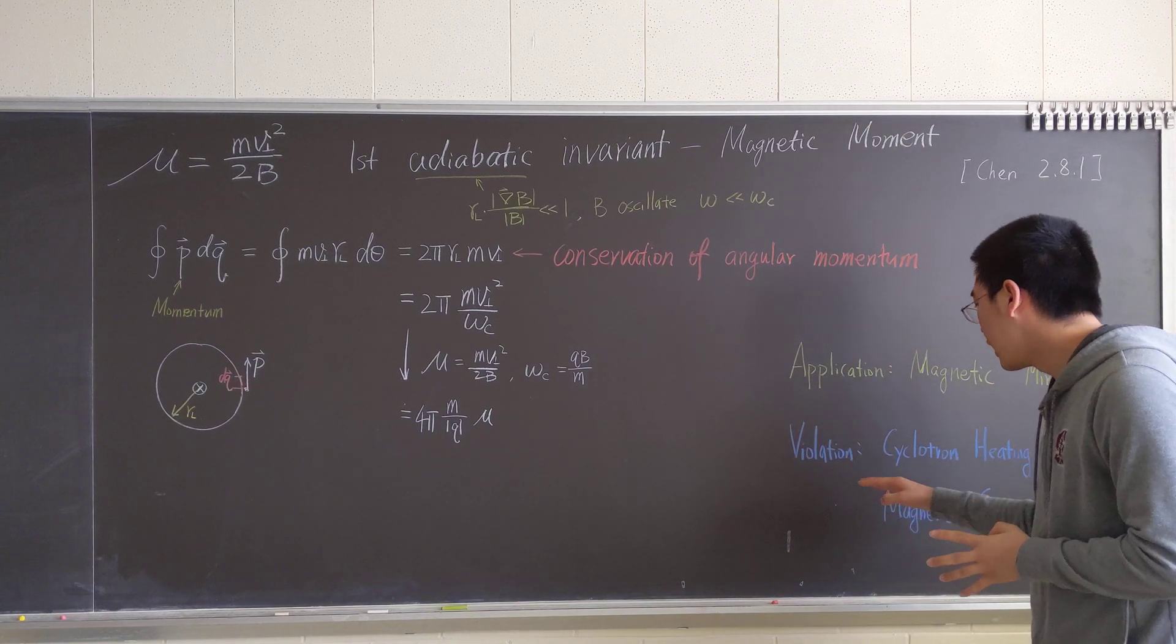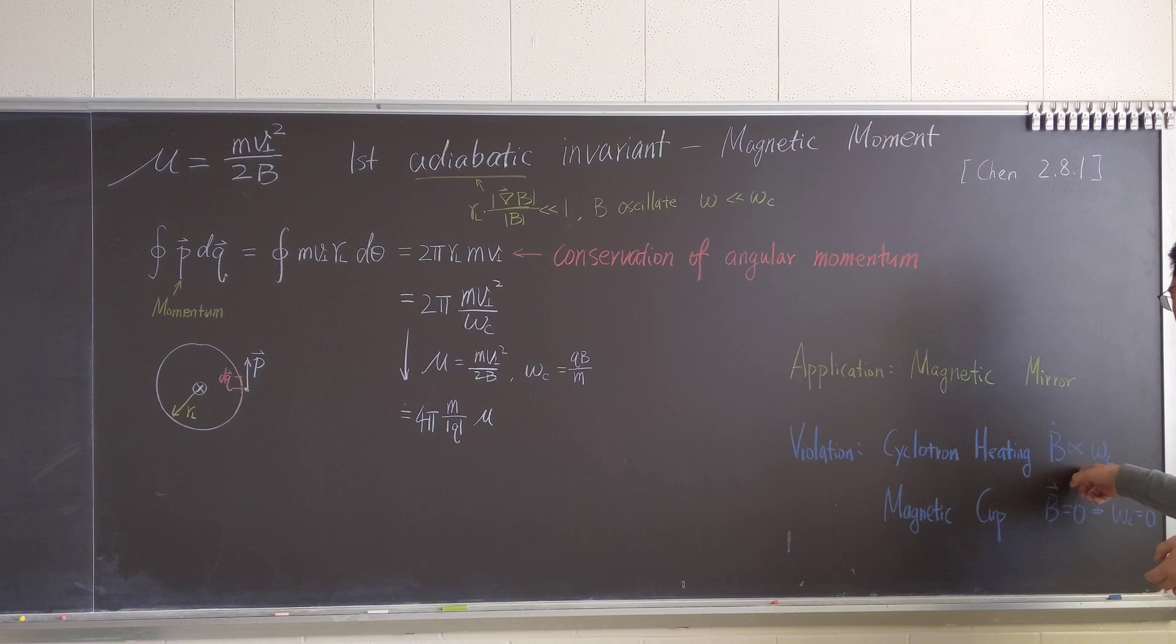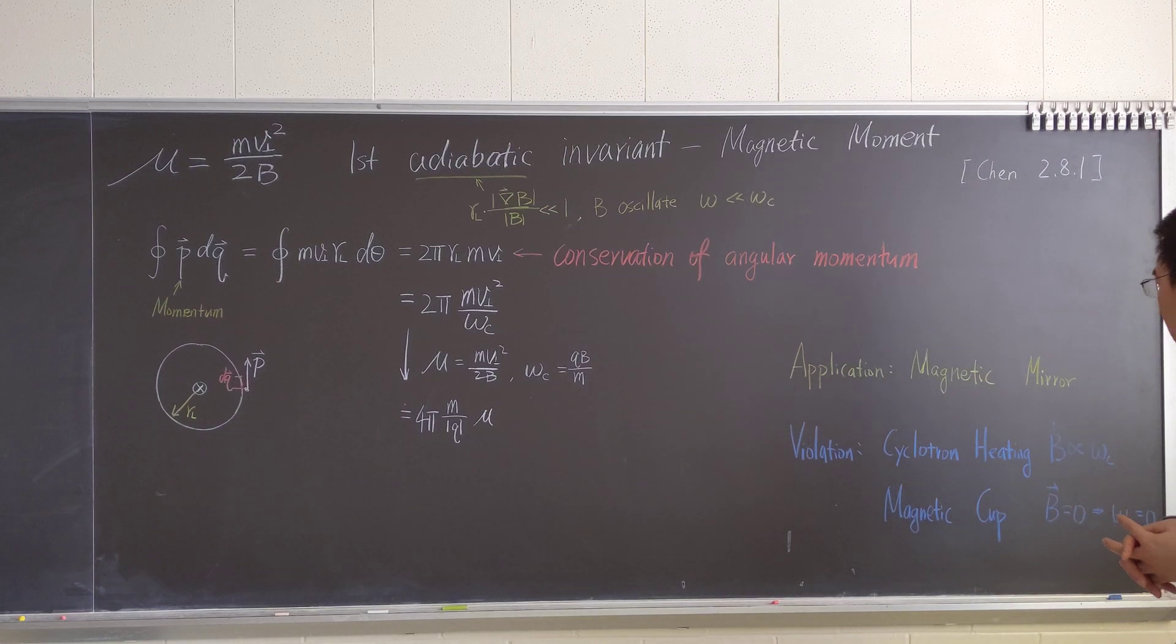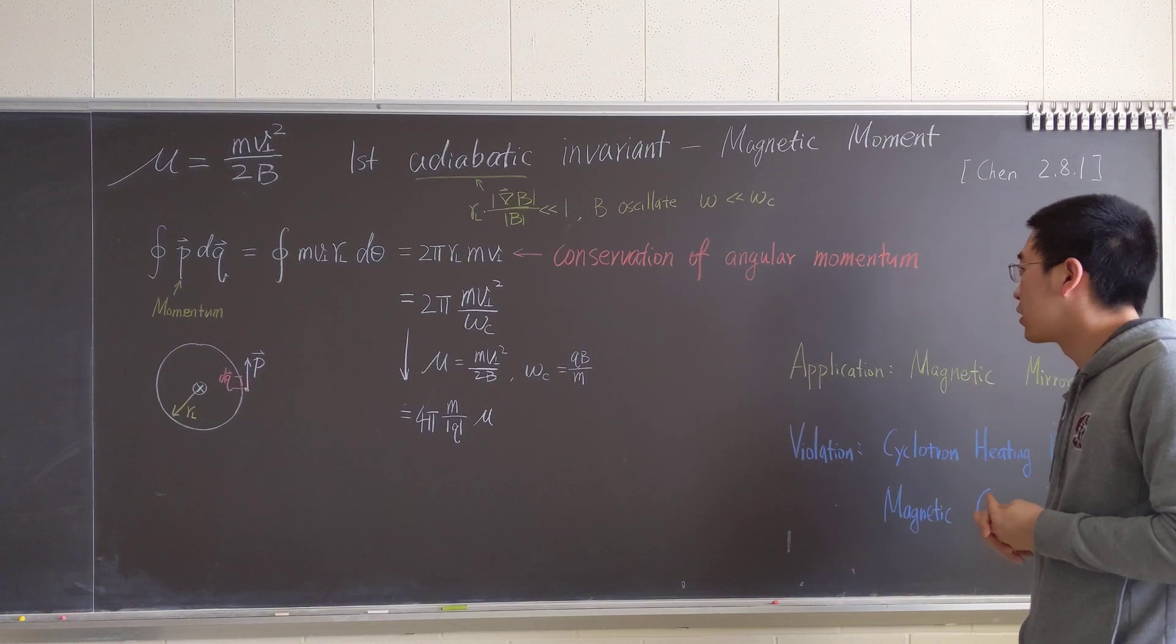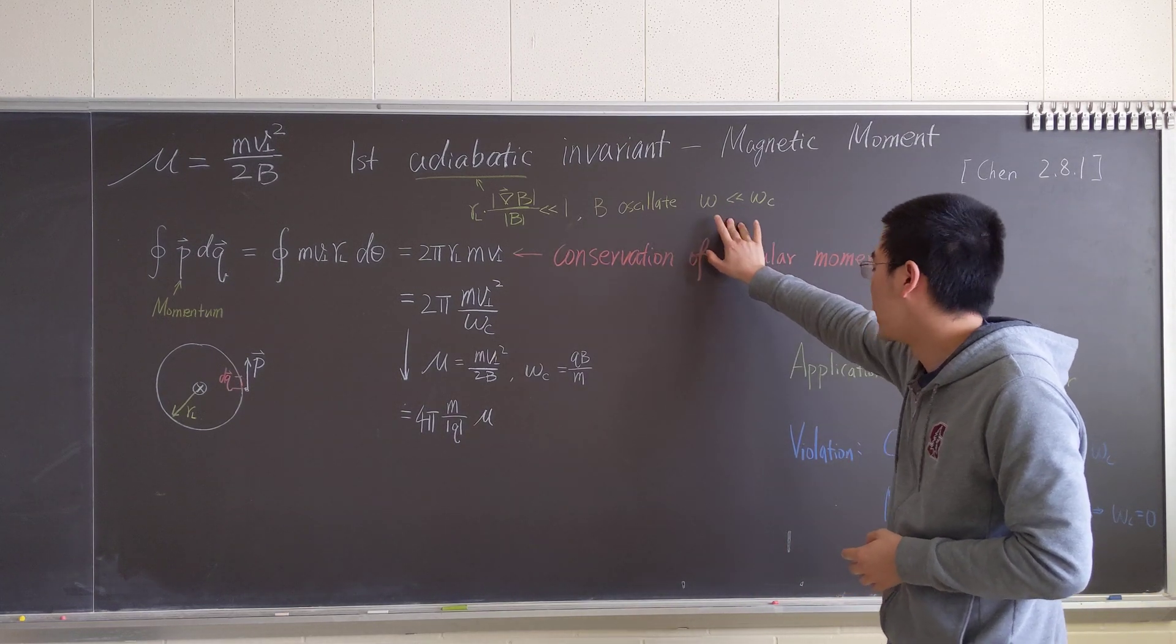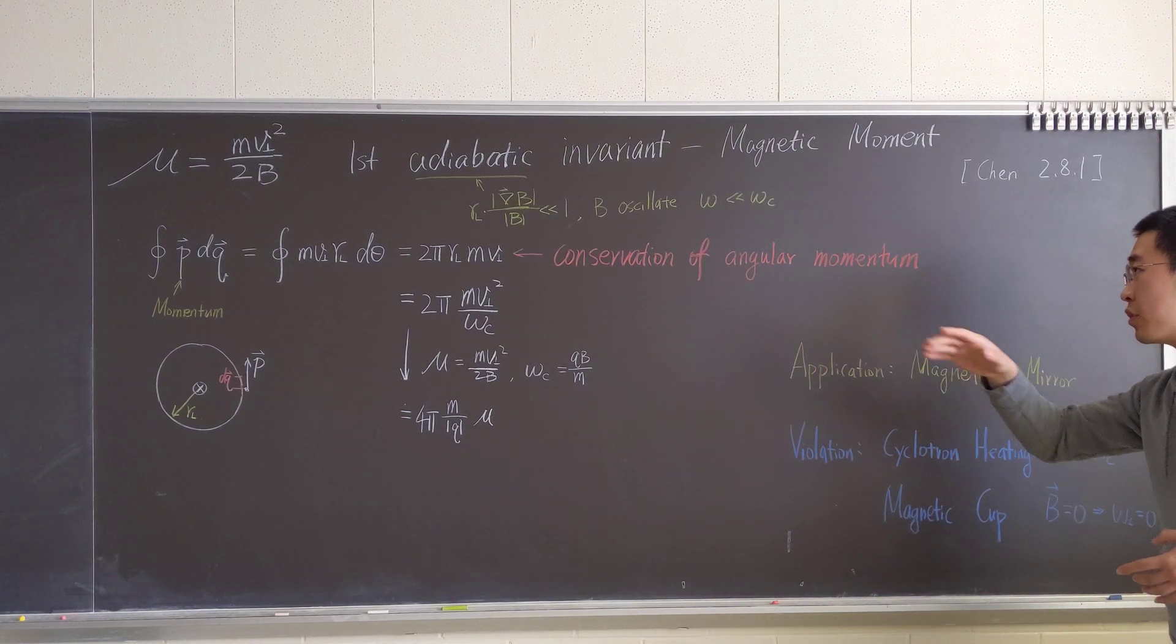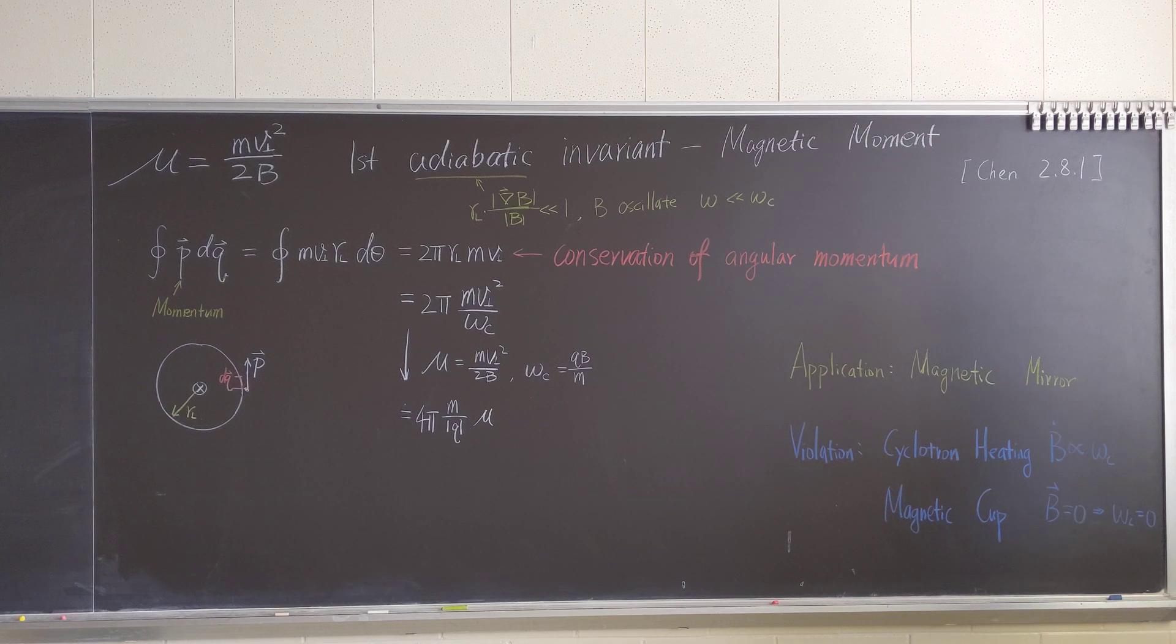Let's talk about the violation of the adiabatic invariant. For instance, cyclotron heating. You can think of, pretty much, microwave the particle. So the frequency is, the oscillation of the magnetic field is close to the cyclotron frequency, which violates the time variance of adiabatic requirement. So it's a violation. So μ won't be an adiabatic invariant anymore.